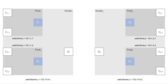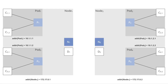For every pod, there exists a corresponding switch called a pod switch. For every container executing in the context of a pod, there exists a link from the container to the corresponding pod switch. For every node, there exists a corresponding switch called a node switch. For every pod hosted on a node, there exists a link from the corresponding pod switch to the corresponding node switch. For every daemon hosted on a node, there exists a link from the daemon to the corresponding node switch. Finally, there exists a link from every node switch to every other node switch.